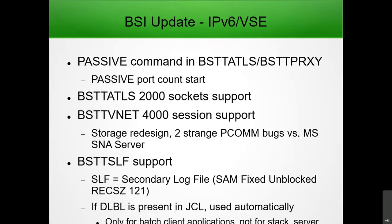We added a new facility at customers' request: a secondary log file. The secondary log file is a SAM fixed unblocked records file that takes the SYSLIST log being generated and writes it to a disk file. If the DLBL is present in the JCL we automatically do it; if there's no DLBL for that job, it doesn't get done. It's obviously only for batch applications and not designed for servers — a secondary log file for the stack could become a very large file over weeks and months.